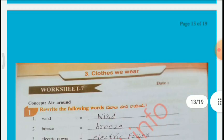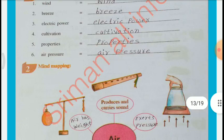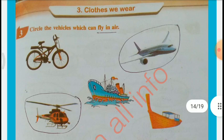Worksheet No. 7 — Concept: Air Around Us. Rewrite the following words: Wind, Breeze, Electric Power, Cultivation, Properties, Air Pressure, Mind Map. Mind map of Air: produces and carries sound, exerts pressure, carries smell, used for breathing, occupies space, air has weight. Circle the vehicles which can fly in air: Aeroplane, Helicopter.